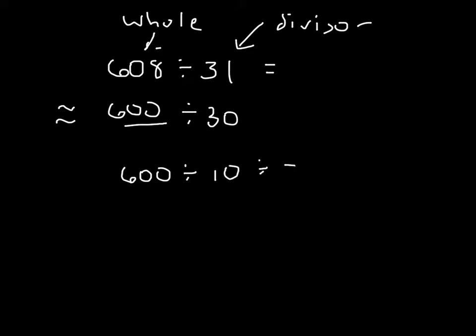600 divided by 10 already is 60, and we divide it by 3, we get 20. So our estimate for this is 20. Remember, I can't write my answer here, because this is just an estimate for the answer.